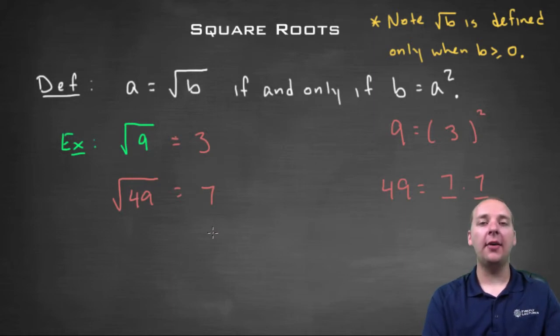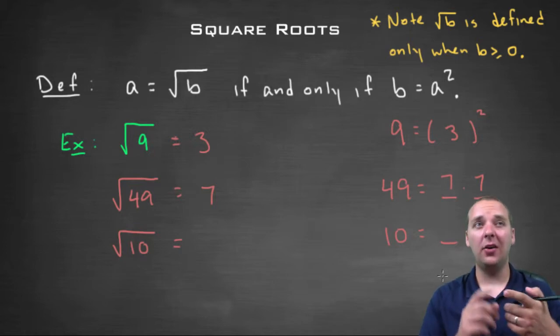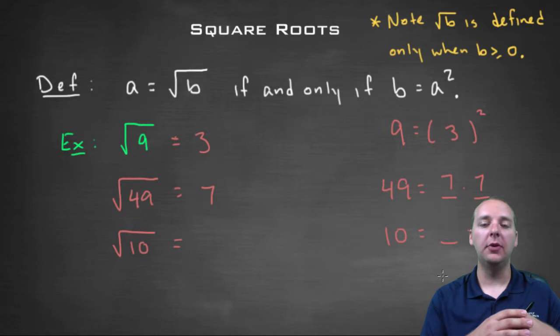Now not all numbers have very nice pretty square roots. For example, if you take the square root of ten instead of the square root of nine, you would have to find a number that if you squared it, which means multiplied it to itself, it would give you ten. Well the factors of ten are one times ten and two times five. There's not a nice number so that if you squared it it would give you ten.